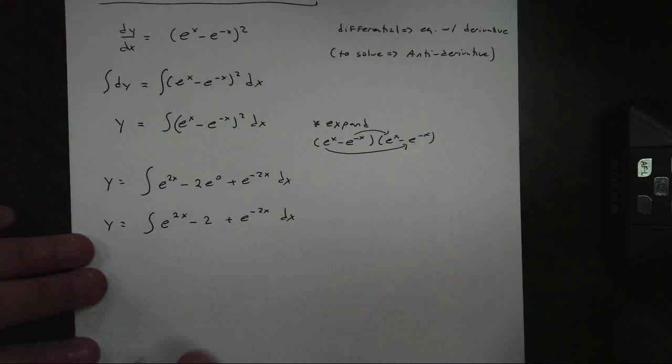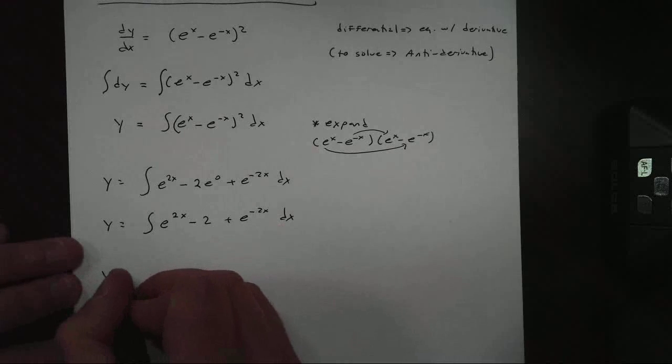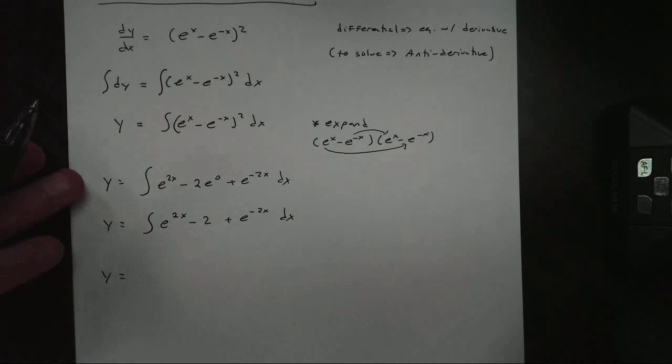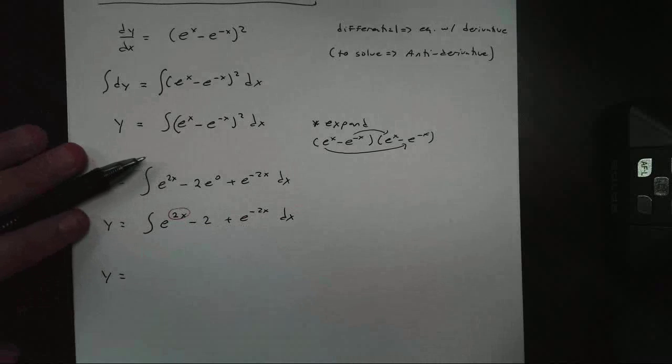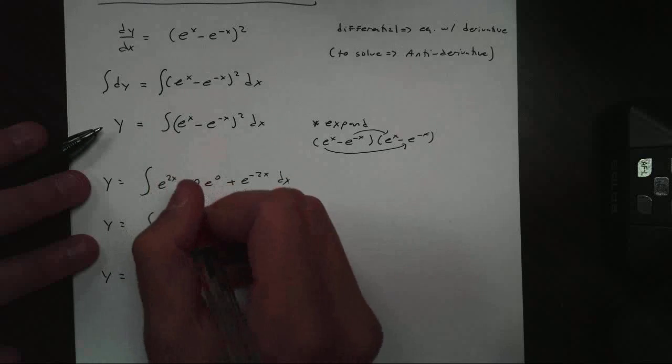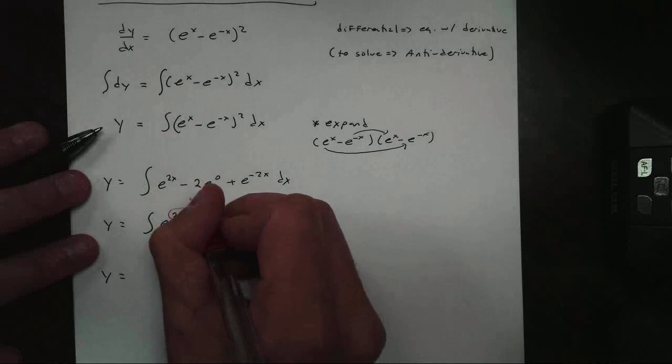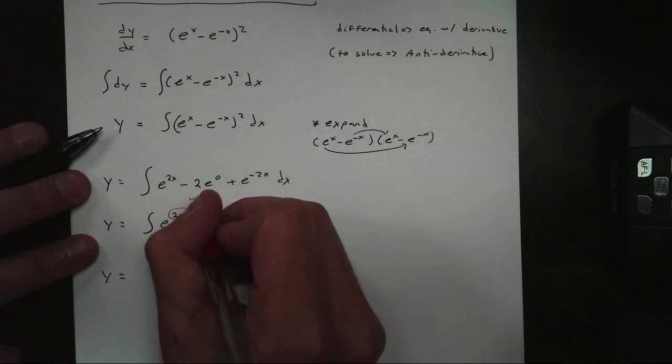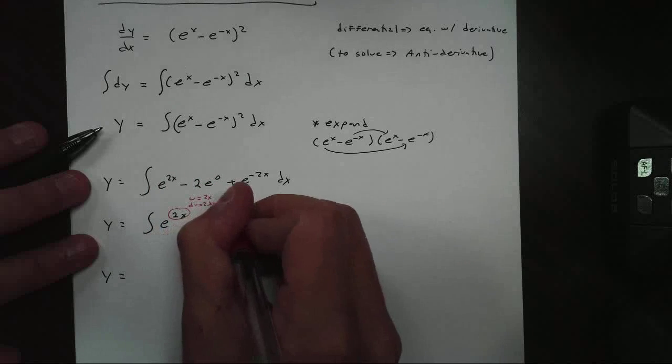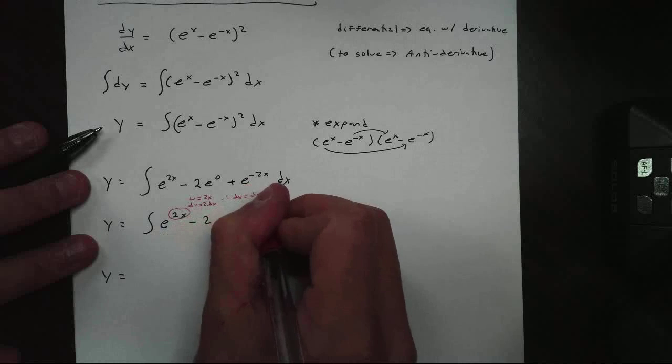And I am going to go ahead and take this antiderivative. Now I am going to use kind of a shortcut right here. For my first one, I got this 2x right here. I know I'm going to get e to the 2x, but let's see what happens. This becomes u equals 2x, du equals 2 dx. Therefore, dx equals du over 2.